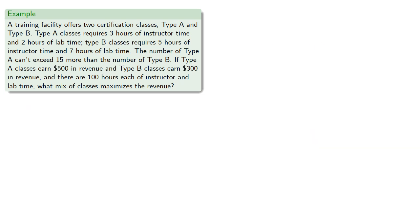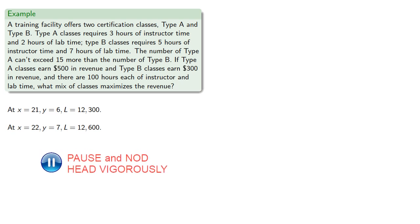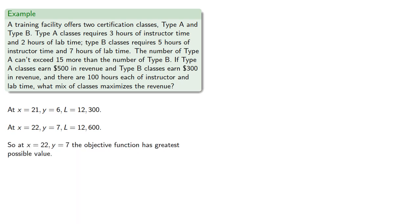Putting our results together, we see, and so at X equals 22, Y equals 7, our objective function has the greatest possible value.